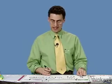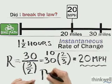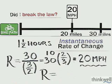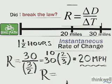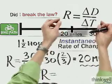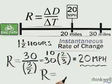Let's try to use the formula for the instantaneous rate right at that point. Rate equals — now remember what the formula is. The formula is that rate equals the change in distance divided by the change in time. Now at this instant in time, at that very second I cross the sign, what was my change in distance at that very instant?